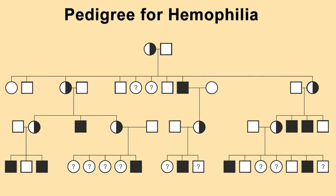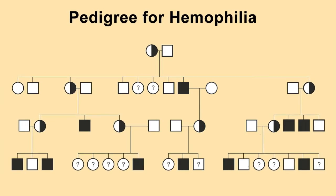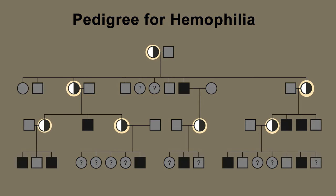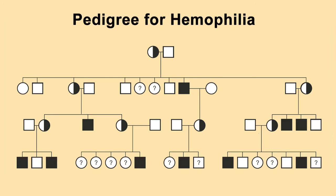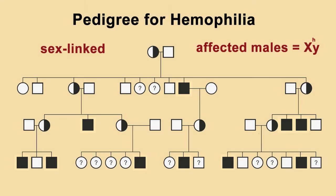So now let's return to that difficult pedigree for hemophilia and see if we can make more sense of it. The first thing that seems obvious is that it has many female carriers and no male carriers. Second, the pedigree is filled with male victims of this disease, but no female victims. This is very strong evidence that this is a sex-linked disease, with the allele causing hemophilia located on the X chromosome. Since men only have one copy of the X chromosome, it's no wonder they are more likely to inherit the disease.